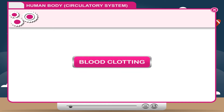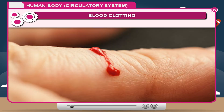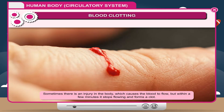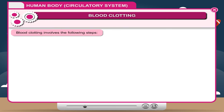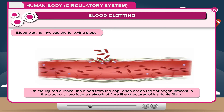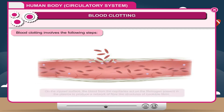Blood clotting: sometimes there is an injury in the body which causes blood to flow, but within a few minutes it stops and forms a clot. Blood clotting involves the following steps. Step one: on the injured surface, blood from the capillaries acts on the fibrinogen present in the plasma to produce a network of fiber-like structures of insoluble fibrin.